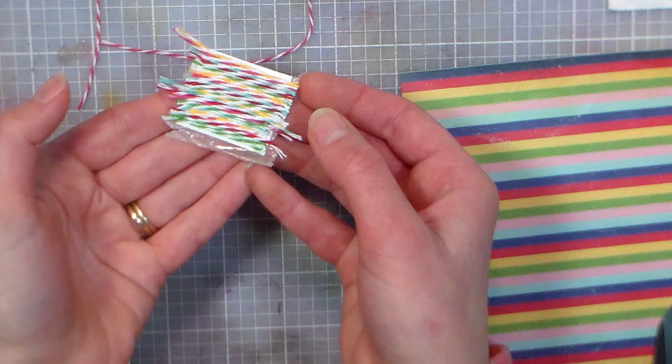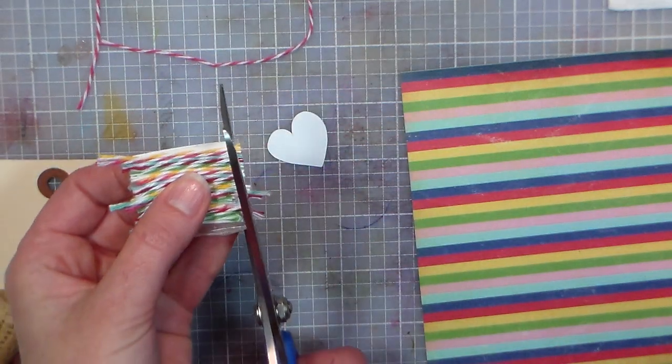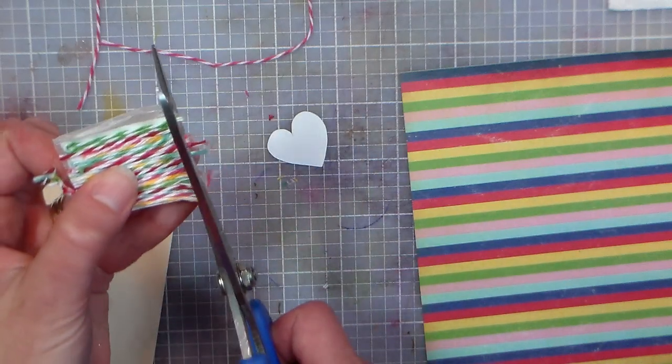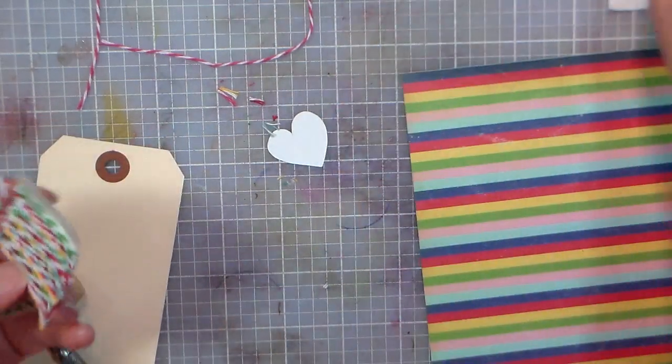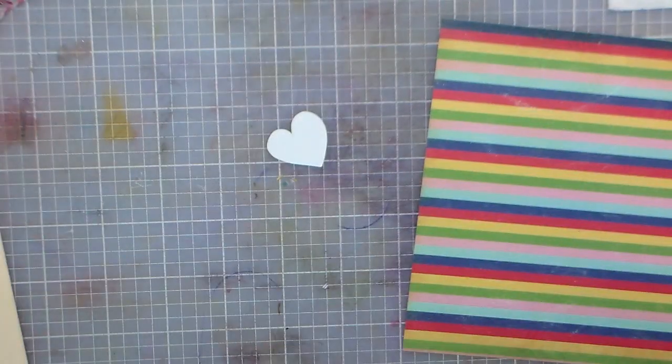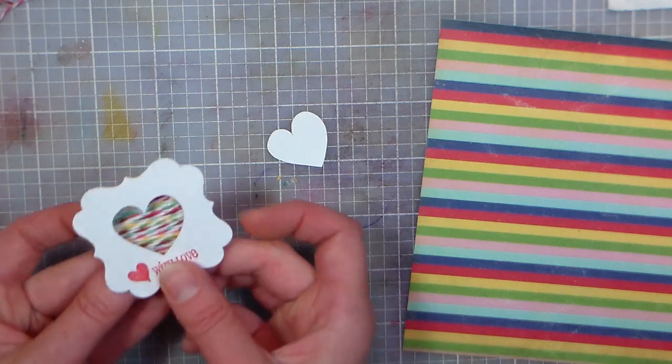Alright, I've stuck my pieces down. Now I'm just giving it a trim on the side. Oops—my fabric scissors do not like the adhesive. Maybe I can trim that up a little more. There we go.